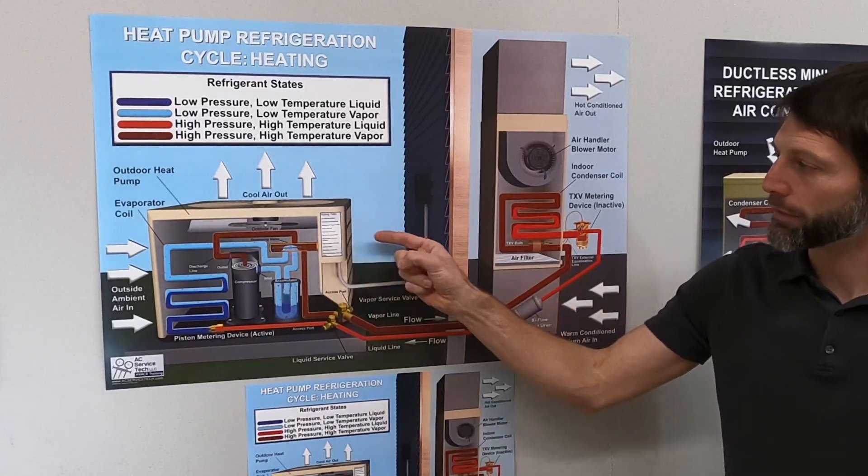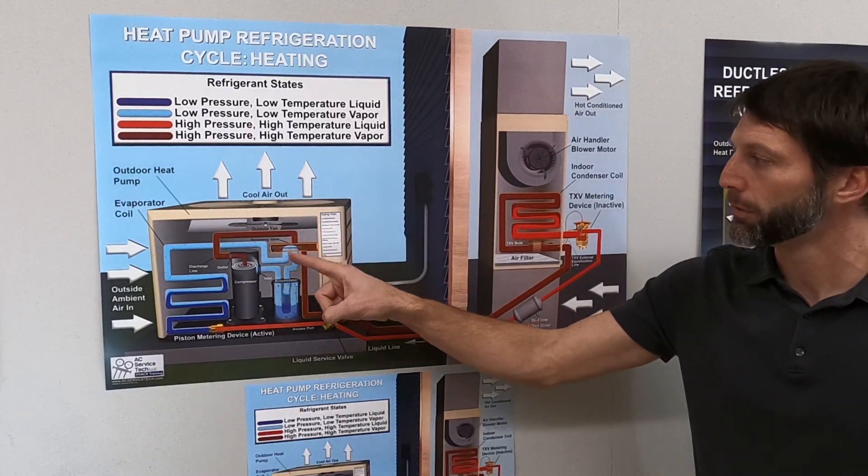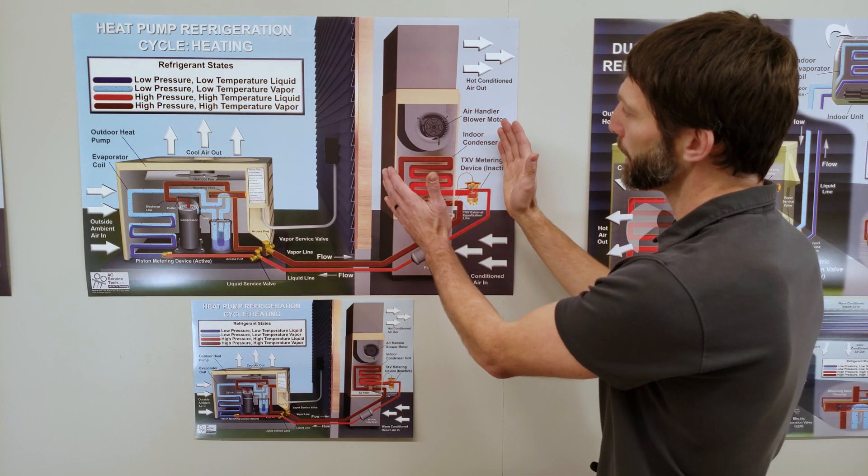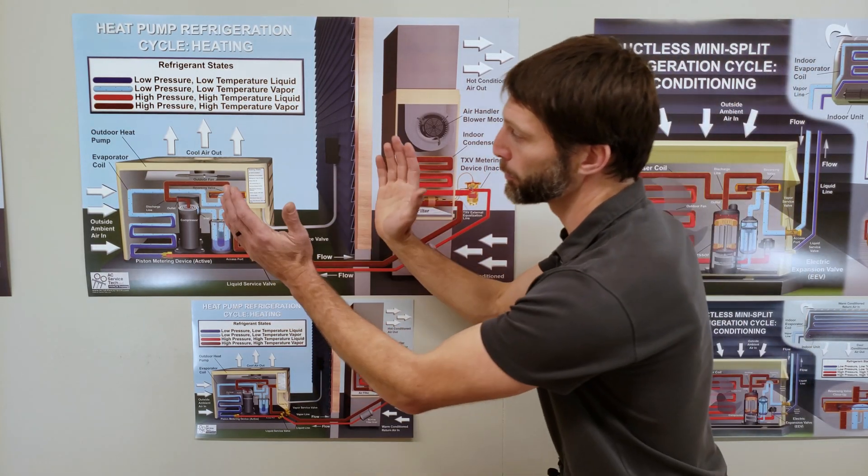Right here you have your reversing valve. It slid this way to connect the tube, the middle and the left tube right here. So you are rejecting heat inside from the refrigerant and you are absorbing heat outside.